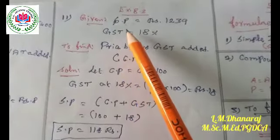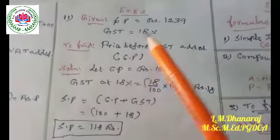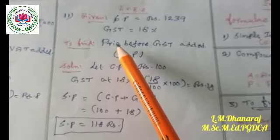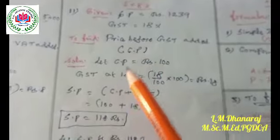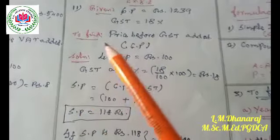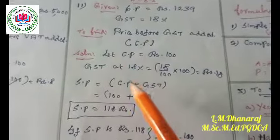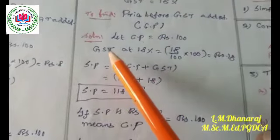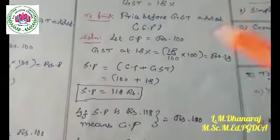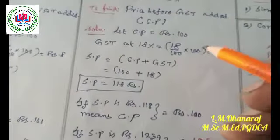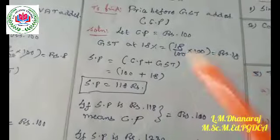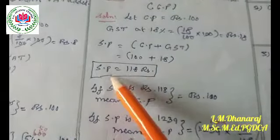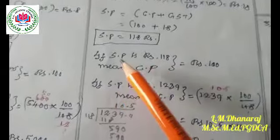Question number eleven: the selling price is rupees 1,239 and GST is 18%. We have to find the price before GST is added, that is the cost price. This is similar to the previous sum — the tax is different: VAT versus GST. Let the cost price be rupees 100. GST at 18% means GST amount is rupees 18. Selling price equals cost price plus GST: 100 plus 18 equals rupees 118.